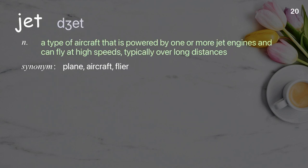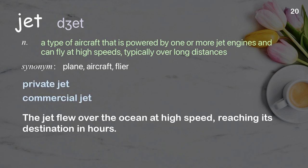Jet: A type of aircraft that is powered by one or more jet engines and can fly at high speeds, typically over long distances. Examples: private jet, commercial jet. The jet flew over the ocean at high speed, reaching its destination in hours.